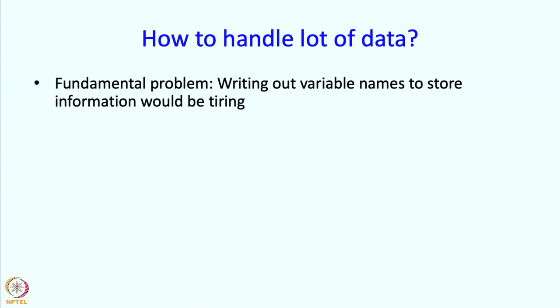So computers handle a lot of data. And how do they do that? There is a very basic problem. If you want to have lots of data, you want to have lots of variables, presumably. If you need lots of variables, then just writing out the variable names to use would be really tiring. So maybe you want 1000 variables to represent pressures at 1000 points, then you may have to write something like double pressure1, pressure2, up to pressure1000. Nobody would really want to do that.